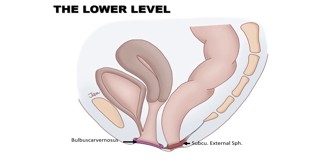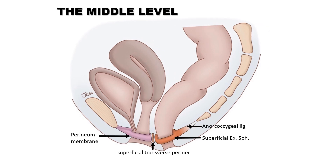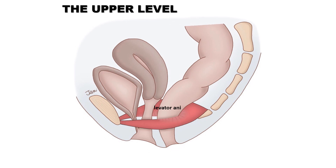The lower level — subcutaneous external sphincter — can be divided without fear of incontinence in any case of fistula surgery. The middle level — superficial external sphincter — can be divided in most fistula surgeries, except in cases of female anterior fistula or recurrent fistula associated with IBD, where sphincter-preserving surgery is warranted. The upper level — levator ani — should not be divided in any patient at any cost, as it can lead to incontinence.